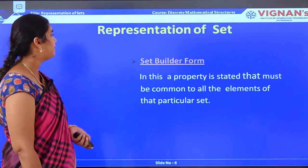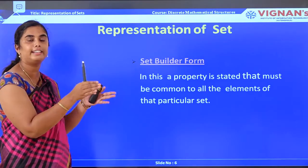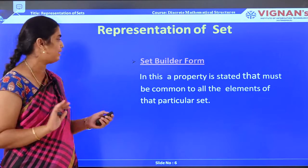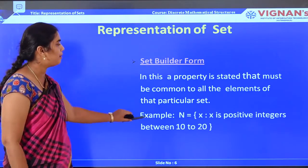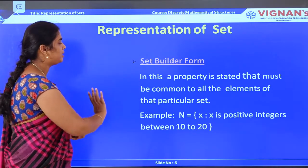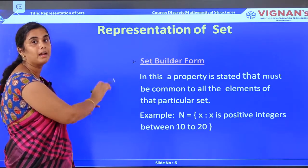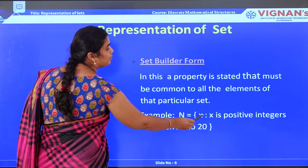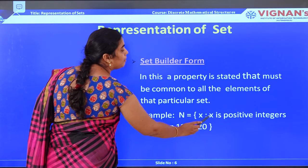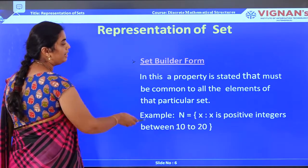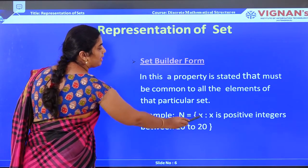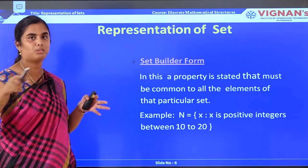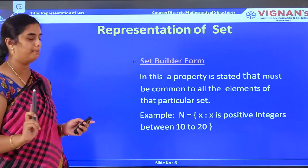Next is the set builder form. In this form, a property related to the set is given, and based on the property you find the elements. For example: {x : x is a positive integer between 10 to 20}. It is opened by curly braces, followed by a variable, followed by the condition. Here x is the variable and the condition is x should be between 10 to 20, so the set will be {10, 11, 12, ... , 20}.